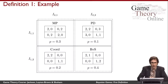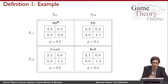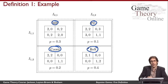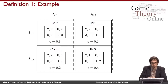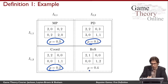Let's look at an example. This example is a little contrived, but it's small enough to illustrate everything important about a Bayesian game. There are four possible games that might be played: Matching Pennies, Prisoner's Dilemma, Coordination, or Battle of the Sexes. Prisoner's Dilemma here uses different payoffs than you might have seen before, but it's strategically the same game. We have a common prior: 30% chance of Matching Pennies, 10% chance of Prisoner's Dilemma, 20% chance of Coordination, and 40% chance of Battle of the Sexes.